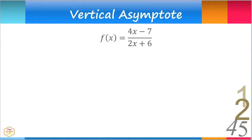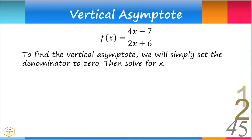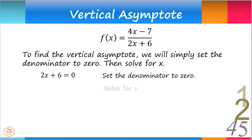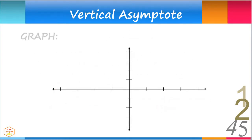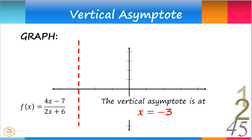Let's consider a rational function. To find its vertical asymptote, we set the denominator to 0 and solve for x. That would be 2x plus 6 equals 0. Solving for x, we get x equals negative 3. Thus, the vertical asymptote is x equals negative 3. The curve runs closer and closer to the vertical line x equals negative 3 but will never intersect nor touch it.